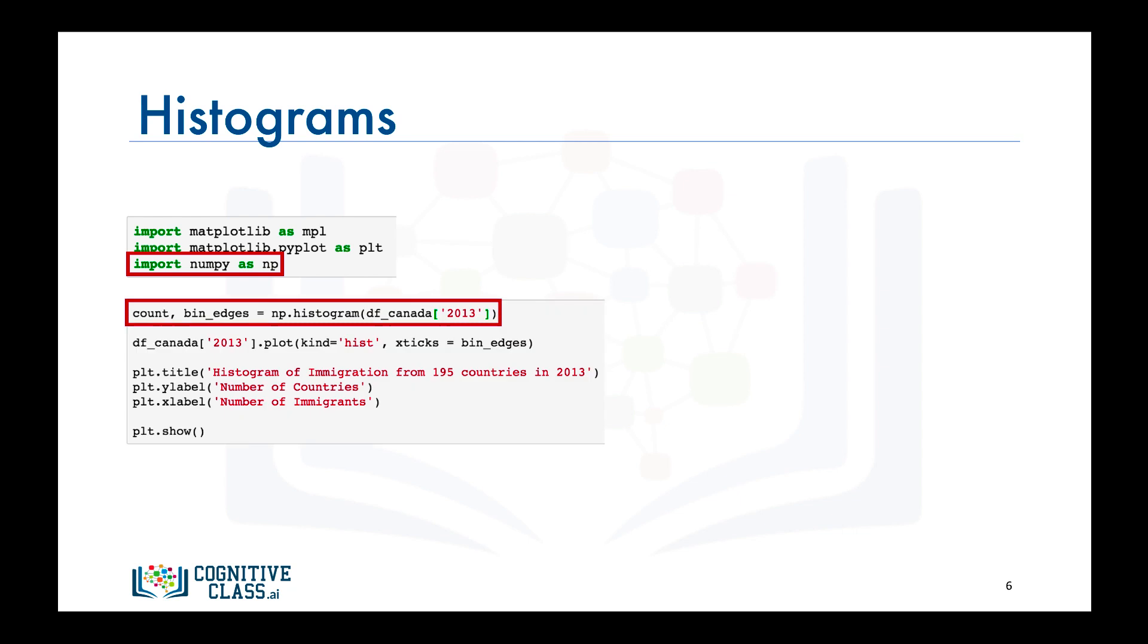What this function is going to do is it is going to partition the spread of the data in column 2013 into 10 bins of equal width. Compute the number of data points that fall in each bin and then return this frequency of each bin, which we're calling count here, and the bin edges, which we're calling bin_edges.